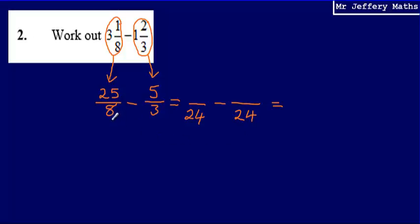Then I need to think about, I'm making an equivalent fraction. So I need to think about what have I multiplied the denominator by to reach this new denominator? And I can say that I've multiplied that by 3.